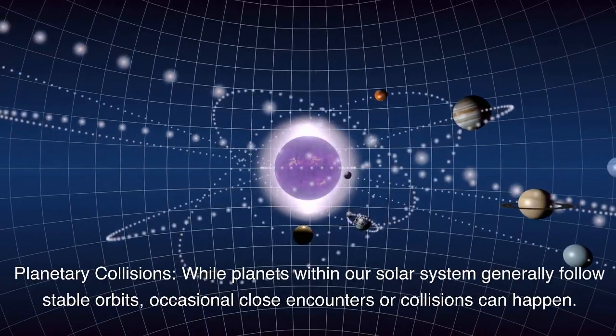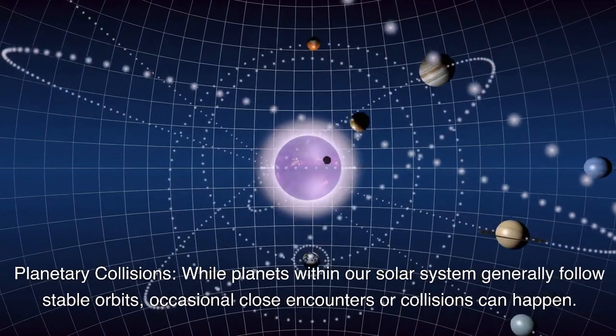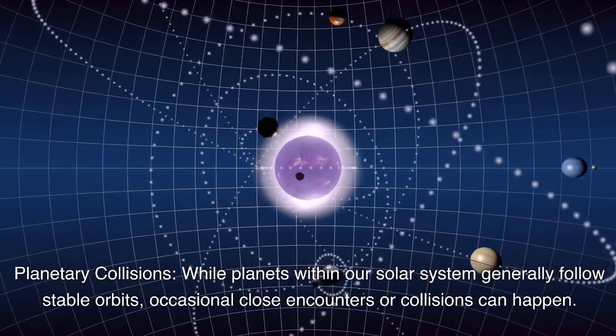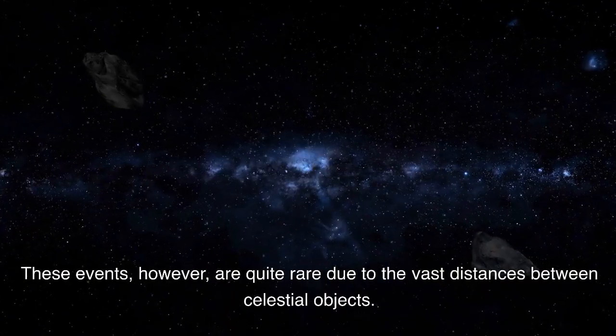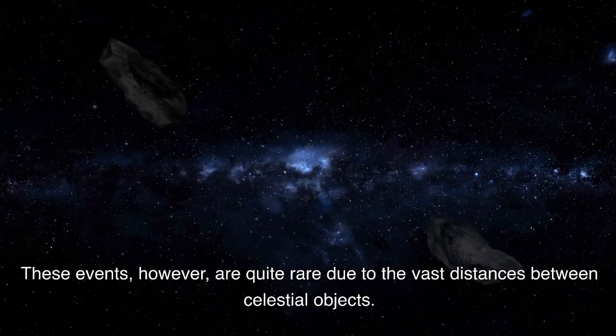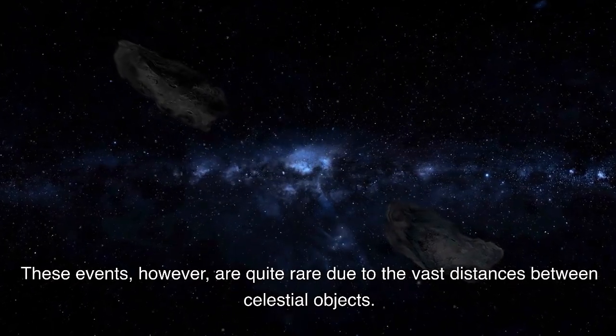Planetary collisions. While planets within our solar system generally follow stable orbits, occasional close encounters or collisions can happen. These events, however, are quite rare due to the vast distances between celestial objects.